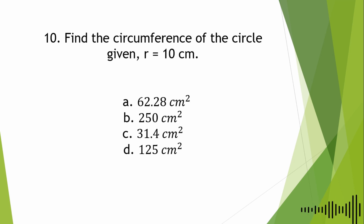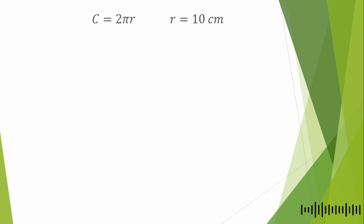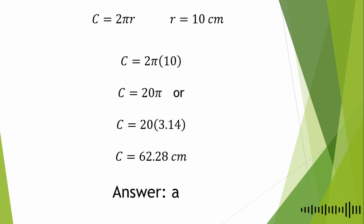For the 10th question: find the circumference of the circle given that the radius is equal to 10 cm. A. 62.28 cm, B. 250 cm, C. 31.4 cm, D. 125 cm. The formula for circumference is C = 2πr. Substituting: C = 2π × 10 = 20π. Using π = 3.14, we get 20 × 3.14 = 62.28 cm. The answer is letter A.